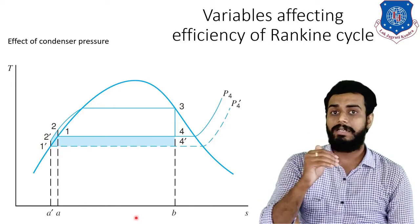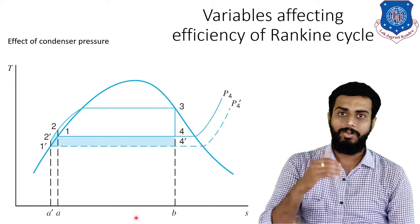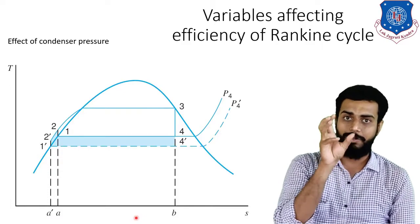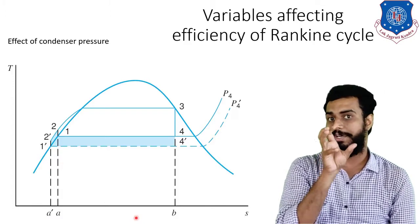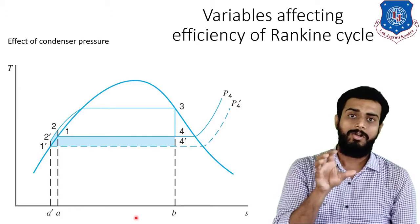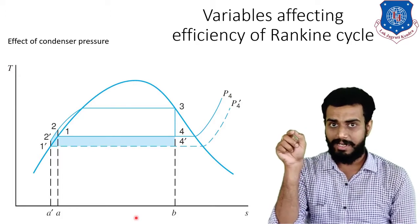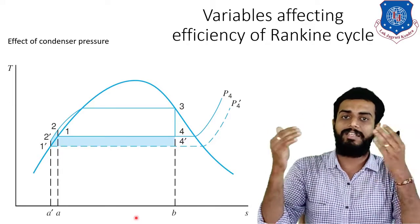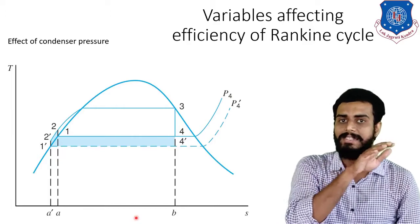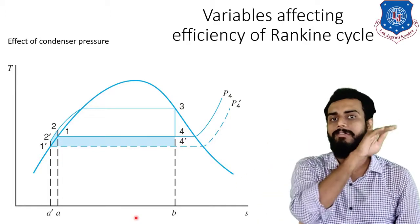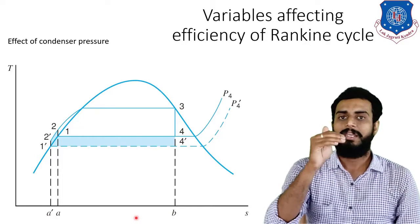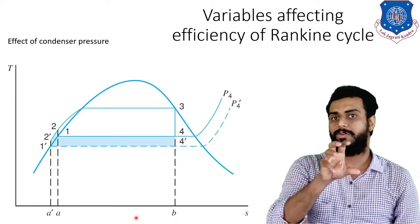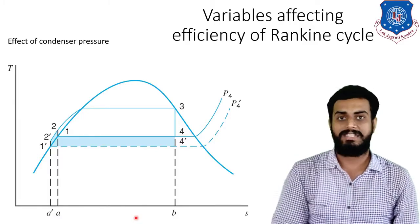If we decrease the condenser pressure, you should be aware that in a TS diagram, the constant pressure line will be horizontal within the saturation vapor dome, and outside the dome on the left and right hand side, that same constant pressure line will be an inclined one. Before the steam formation diagram lecture, you will be very clear about how this constant pressure line is drawn on the TS diagram.